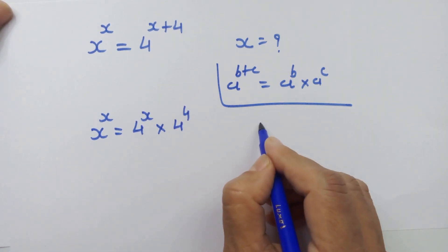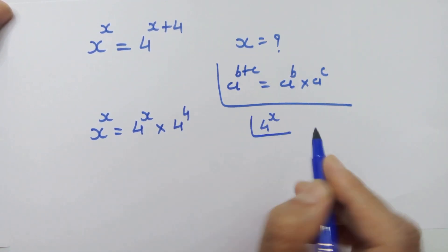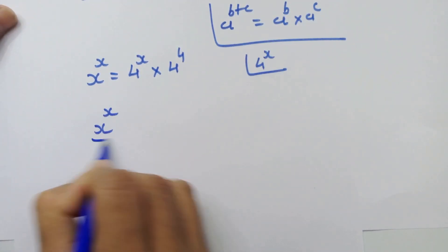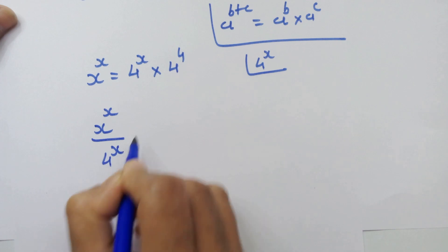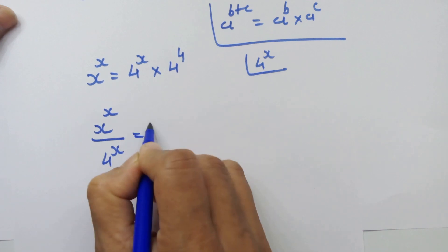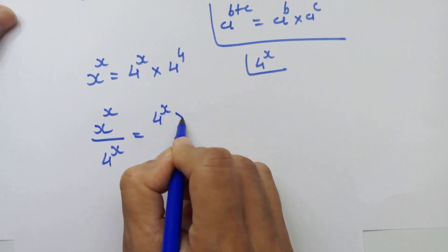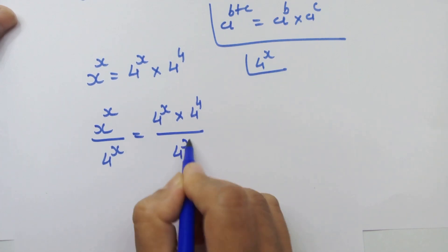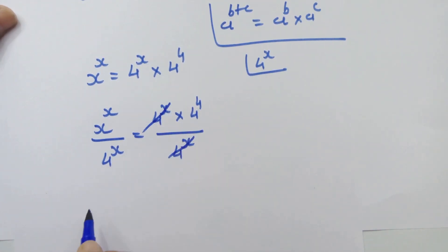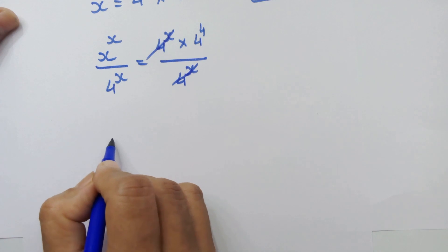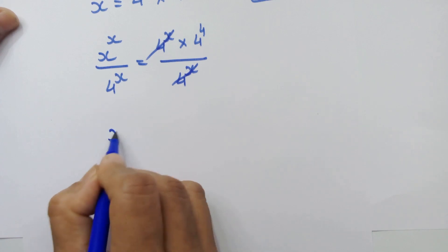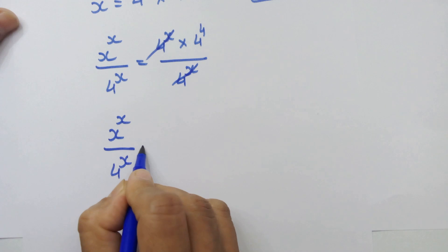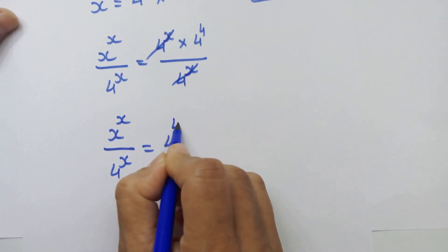Now let's divide by 4 raised to x from both sides. So we have x raised to x upon 4 raised to x is equal to 4 raised to x into 4 raised to 4 upon 4 raised to x. The 4 raised to x terms cancel, giving us x raised to x upon 4 raised to x is equal to 4 raised to 4.